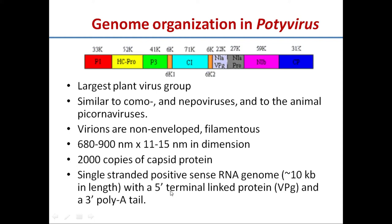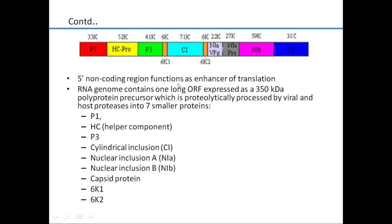Potyvirus has a 5' terminal linked protein called VPG (virus protein genome-linked) and a 3' poly-A tail. In contrast to TMV, which has a 5' 7-methylguanine cap and a 3' tRNA-like structure, potyvirus has a 5' genome-linked protein and a 3' poly-A tail. The 5' non-coding region functions as an enhancer of translation. The RNA genome contains one long ORF expressed as a 350 kd polyprotein precursor.